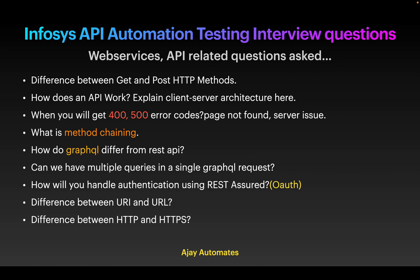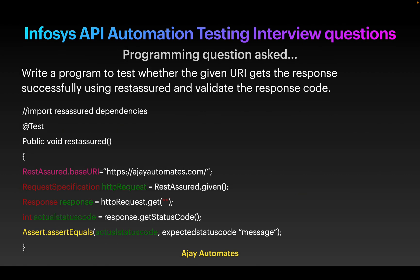There were also a few questions from GraphQL — how GraphQL differs from REST API, and how you can have multiple queries in a single GraphQL request. Since many applications are using GraphQL now, please be prepared in GraphQL technical questions. Questions on handling authentication, the difference between URI and URL, and the difference between HTTP and HTTPS were also asked.